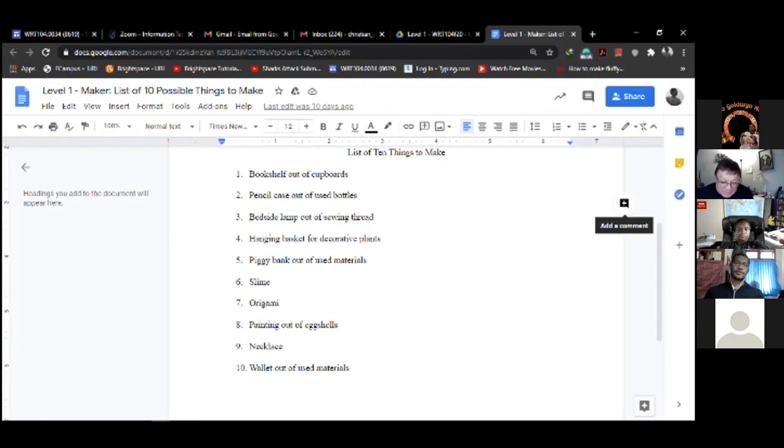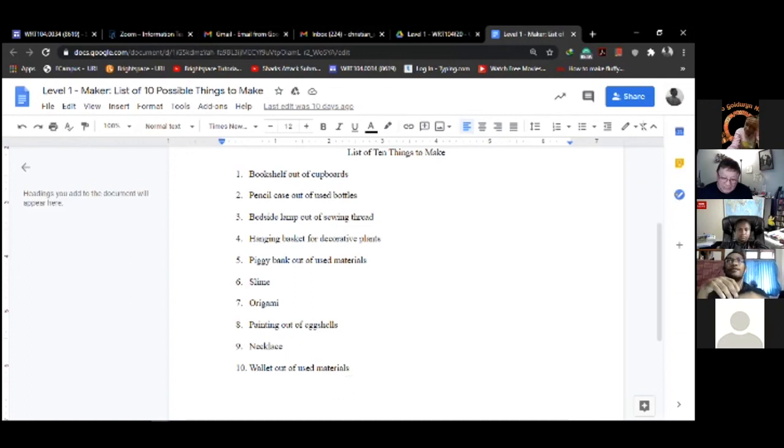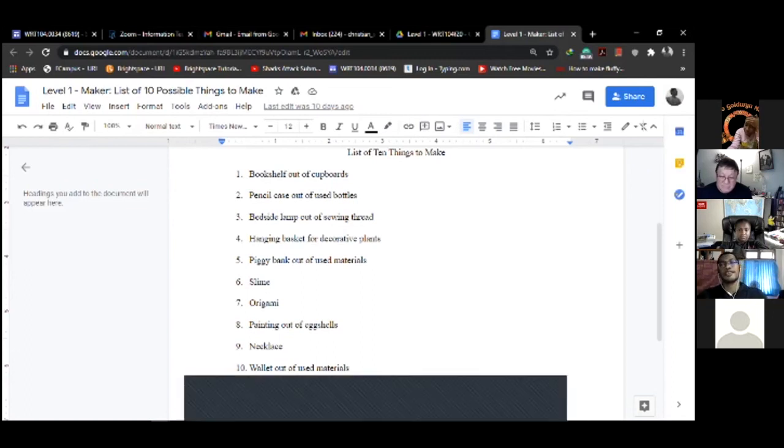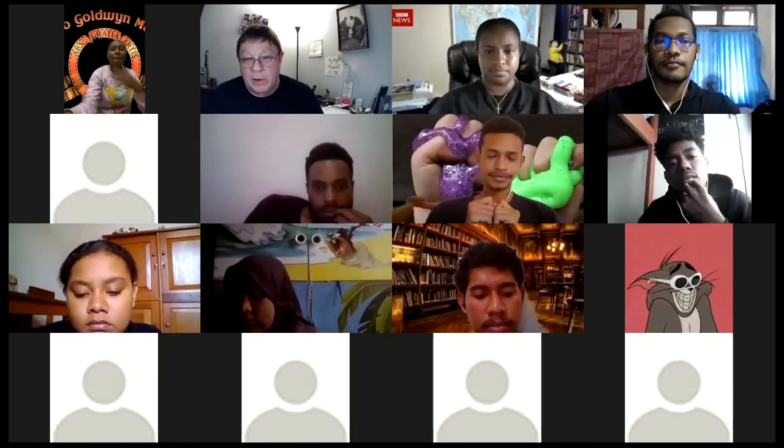These are the things that I was trying to make: make a bookshelf out of cupboards or a pencil case out of used bottles, a bedside lamp out of sewing threads like using balloons and sticking with glue to make the lamp cover and a stand for the bedside lamp, a hanging basket for decorative plants, a piggy bank out of materials such as bottles or cans, slime of course, origami like folding papers Japanese-style and using it as decorative things in houses, painting out of eggshells, I can make a necklace out of coconut shell, and then a wallet from used materials such as plastic or stuff like that. Thanks. You're gonna include that in your badge material, right? That list isn't there yet.